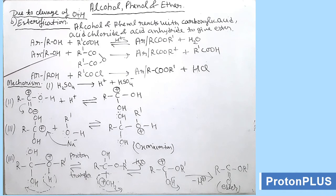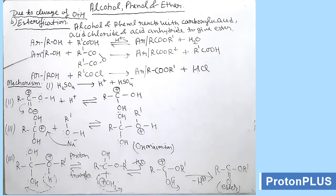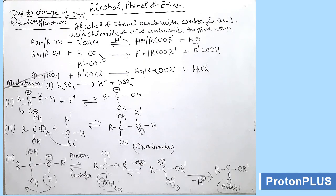This H+ will go to the O- of the anhydride and the product formed is R'COOH, that is the carboxylic acid. Similarly, when alcohol or aromatic alcohol (phenol) reacts with acyl chloride, that is RCOCI, the OH bond cleavage occurs. H+ will go with Cl- and the major product formed is RCOOR' or ArCOR', that is ester.